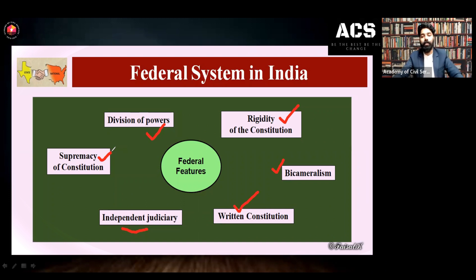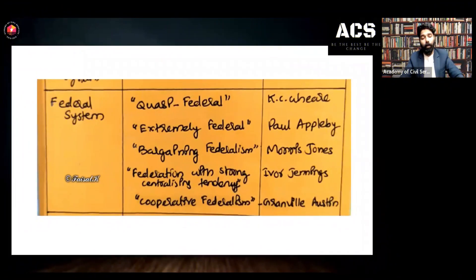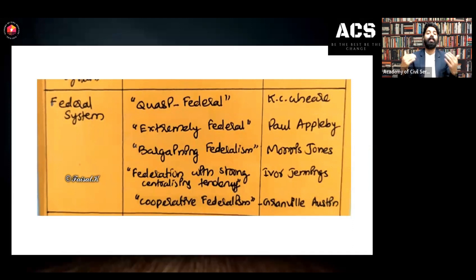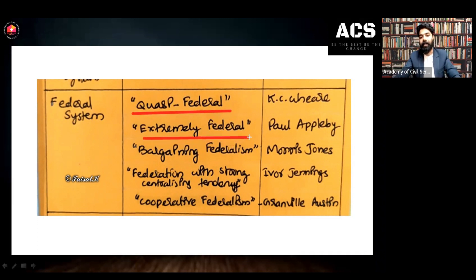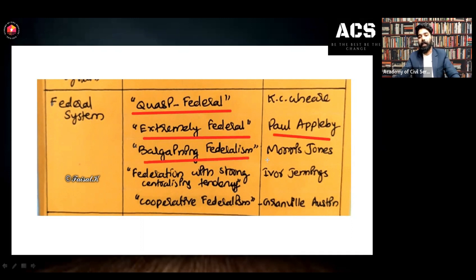These are the unitary and federal features of Indian constitution. When you study federalism, you will see different descriptions by political philosophers, political scientists, and political thinkers. KC Wheare described Indian federalism as quasi-federal. Sometimes in prelims examinations, a question like 'who described Indian federalism as quasi-federal' will be asked. Quasi-federal was described by KC Wheare, extremely federal described by Paul Apley, and bargaining federalism was described by Maurice Jones.